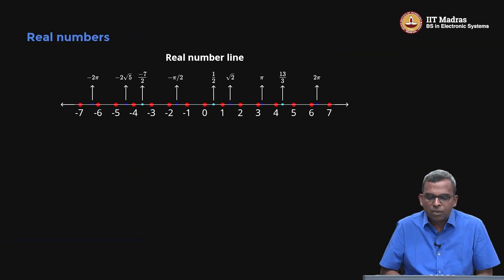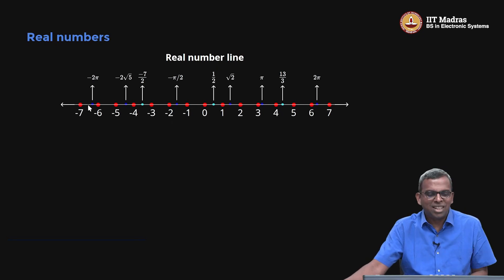First, let us begin with real numbers. We've seen this real line before in Math 1. The real line basically captures all the real numbers. It has 0, 1, minus 1—these are the integers—and then you have a lot of numbers in the middle. You have rational numbers of the form p by q: half, 13 by 3, minus 7 by 2. Then you have square roots, cube roots, those kinds of numbers.